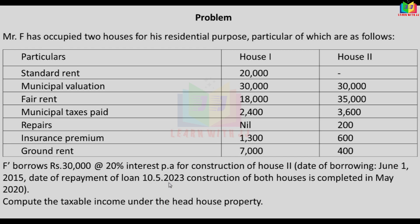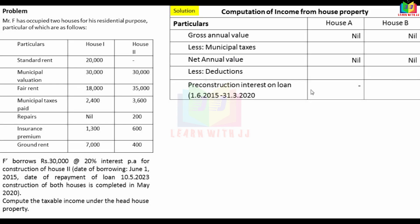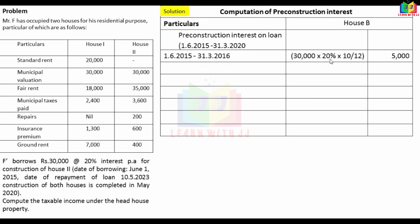The pre-construction interest period is from June 1, 2015 to 31st March 2020, since construction was completed earlier than repayment. Loan amount is Rs. 30,000 at 20%. For the first year (FY 2015-16), the loan started June 1, 2015, so we calculate 10 months: 30,000 × 20% × 10/12.